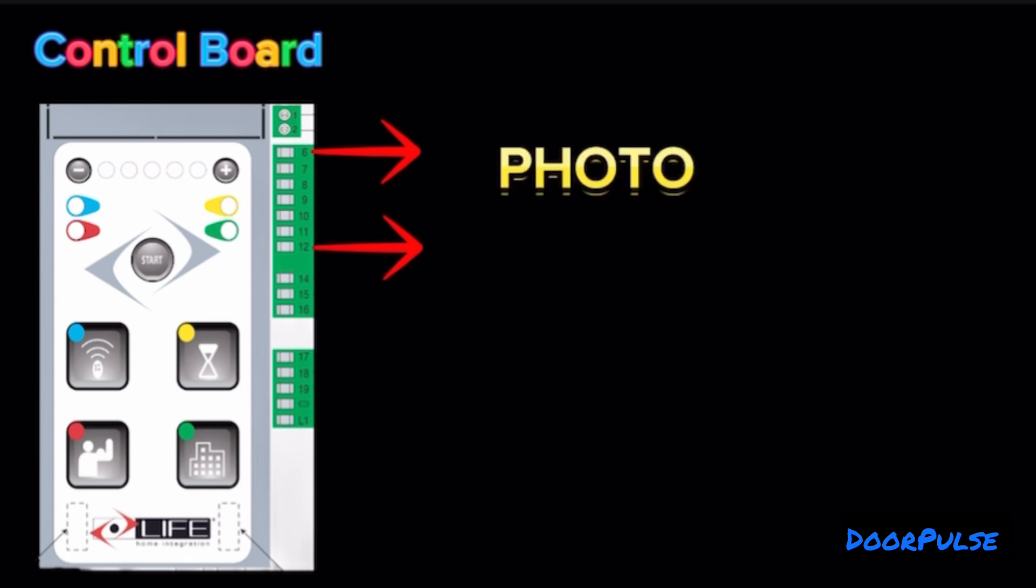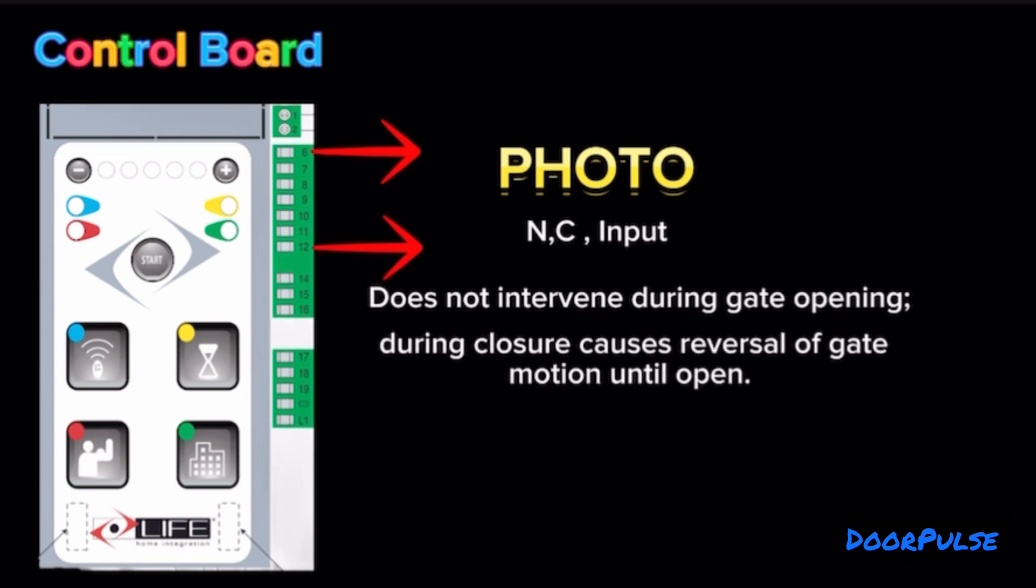Terminals 6 and 12: Photo 2 Terminal. NC Input for photocells or safety devices. Does not intervene during gate opening. During closure, causes reversal of gate motion until open. Leave jumpered if no device is envisaged.